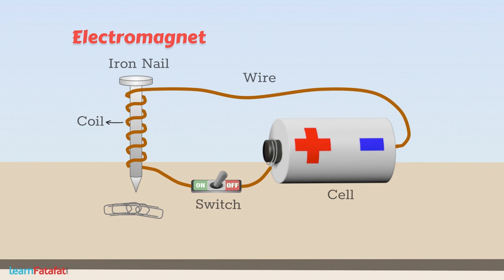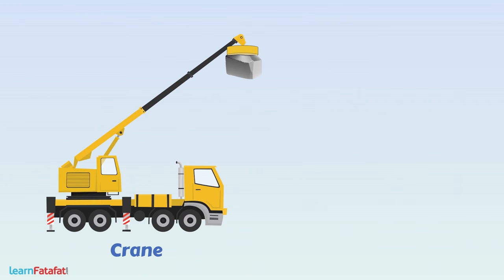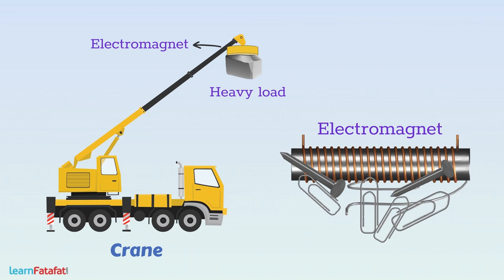There are many uses of electromagnets. Cranes that lift heavy loads use a strong electromagnet to do so. With the help of electromagnets, it is possible to separate magnetic materials such as iron from scrap material.